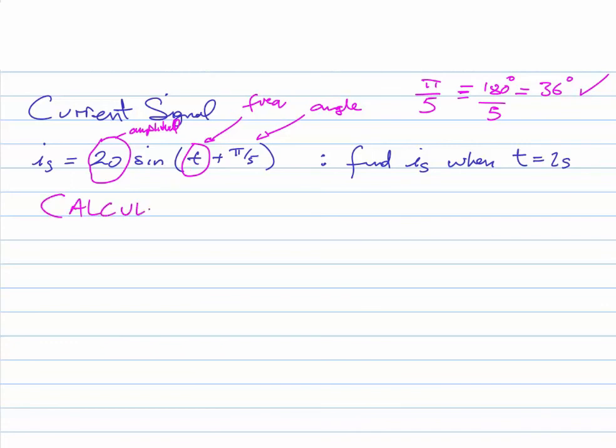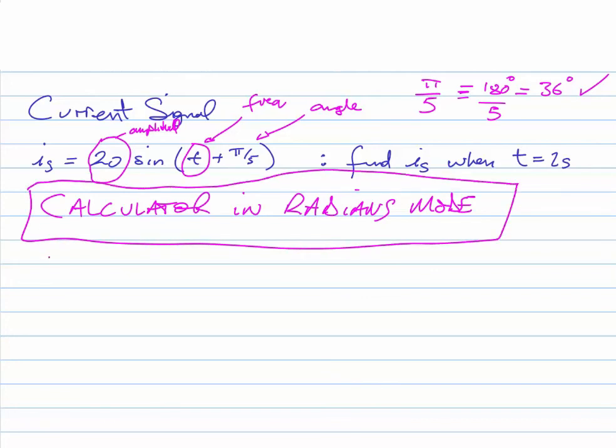And again all we need to do, and it's really important, calculator in radians mode is ultra important otherwise you end up with the wrong answer. So all I do, very simple, get the calculator out: i equals 20 times the sine, t well we're making t equal to 2 here, so t is going to be 2.